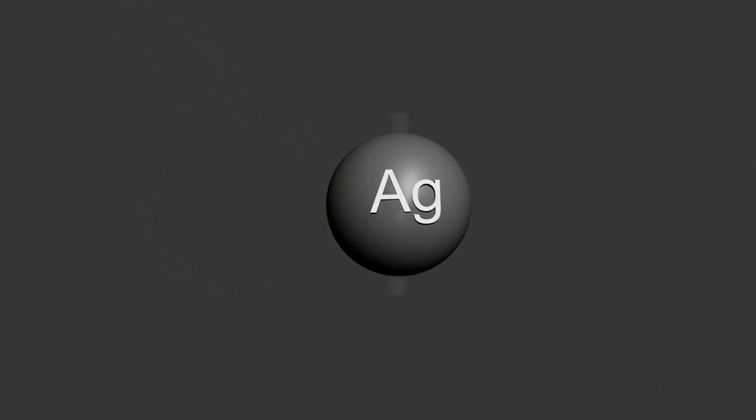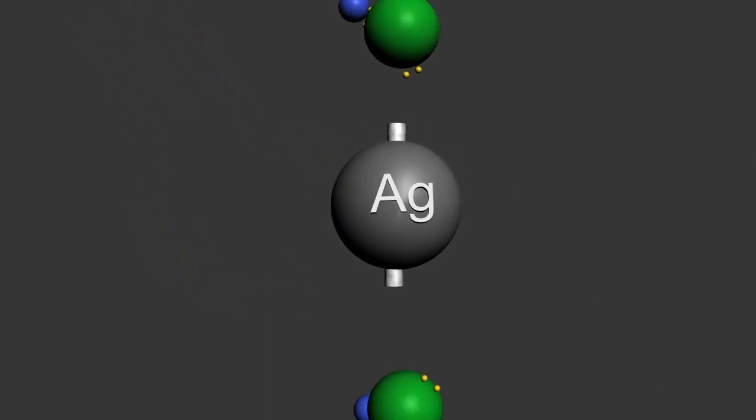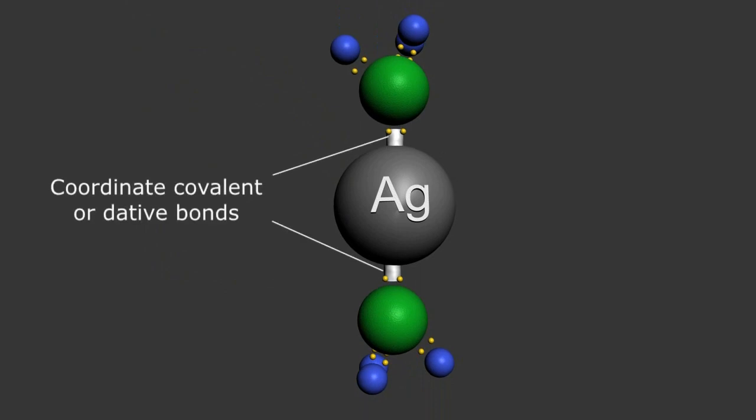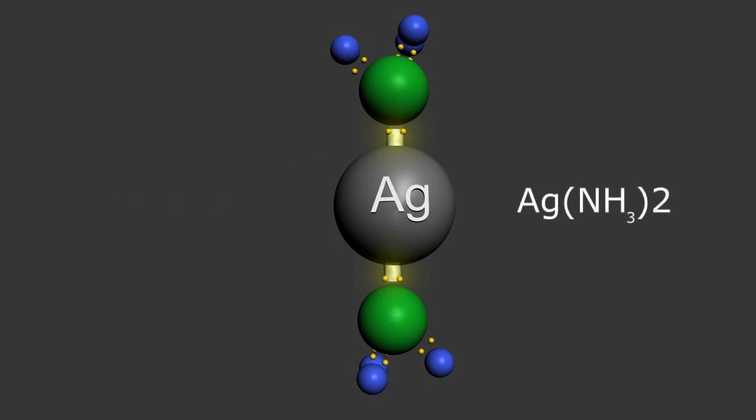However, the nitrogen is willing to donate both of its unshared electrons to the silver cation forming coordinate covalent or dative bonds. Since there are two coordination sites, two ammonia molecules attach to each silver atom.